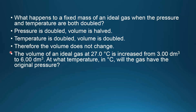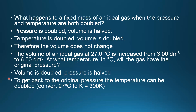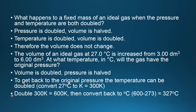Here is one more example. The volume of an ideal gas at 27 degrees C is increased from 3 to 6 decimetres. At what temperature in degrees C will the gas have the original pressure? The volume is doubled from 3 to 6 decimetres, so the pressure is halved. To get back to the original pressure the temperature must be doubled. We convert 27 degrees C to Kelvin by adding 273, giving 300 Kelvin. Doubling that gives 600 Kelvin. Converting back to degrees C by subtracting 273 gives a final temperature of 327 degrees C.